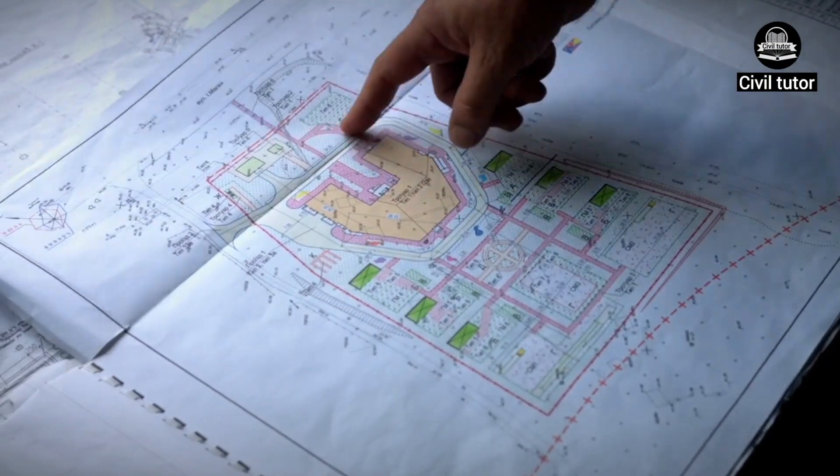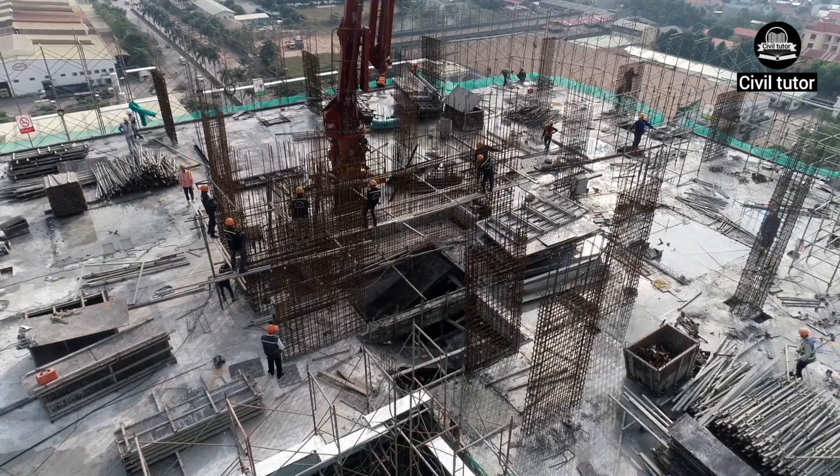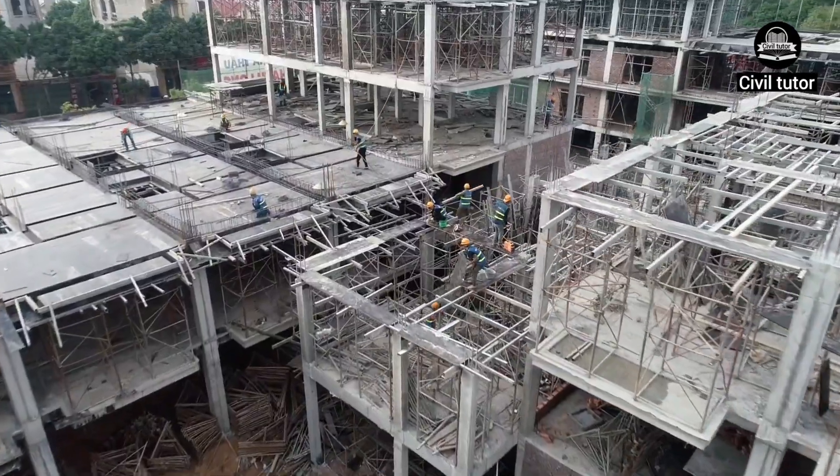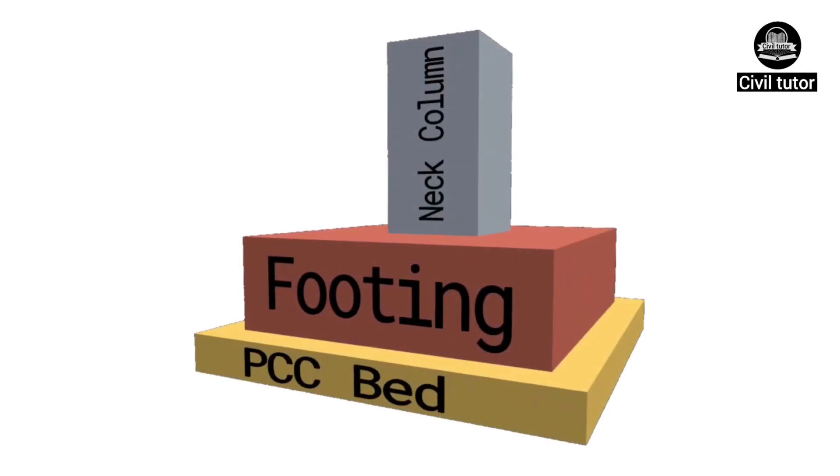After framing an architectural plan of a building, structural planning is done by deciding the position and orientation of columns, followed by positioning of beams, spanning of slabs, and finally selecting the proper type of footing.